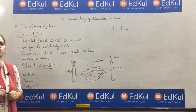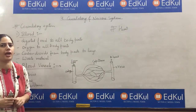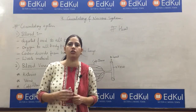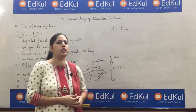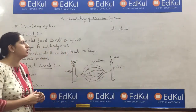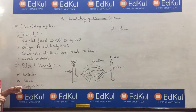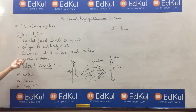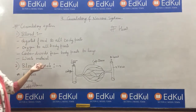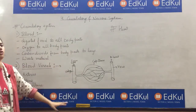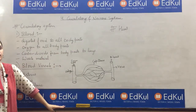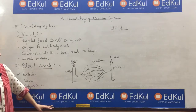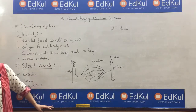The circulatory system helps in circulating blood throughout the body — that is known as the circulatory system. It constitutes three parts: blood, blood vessels, and heart.